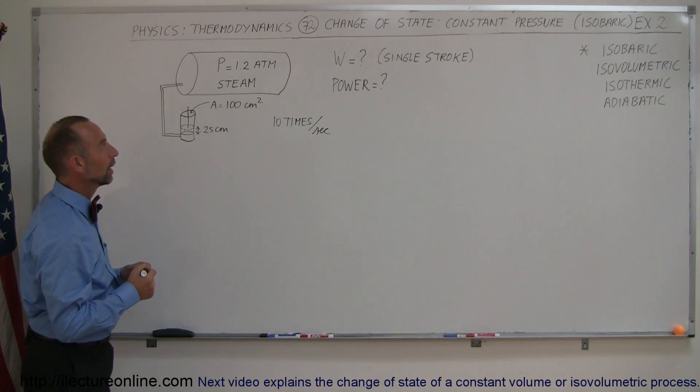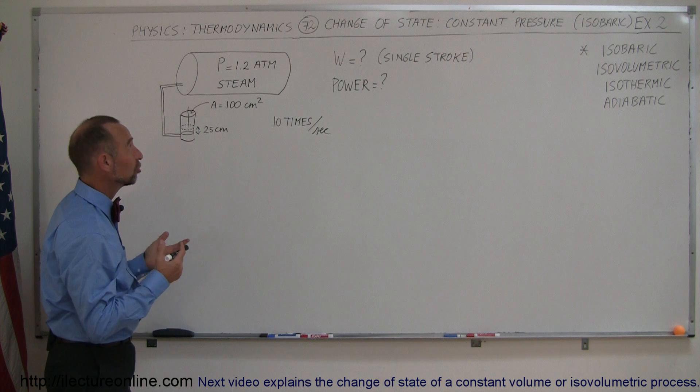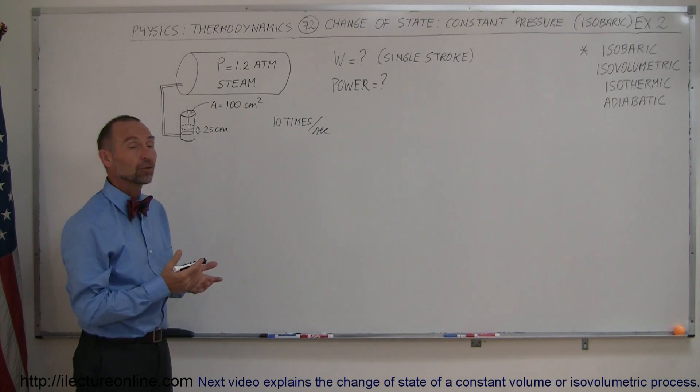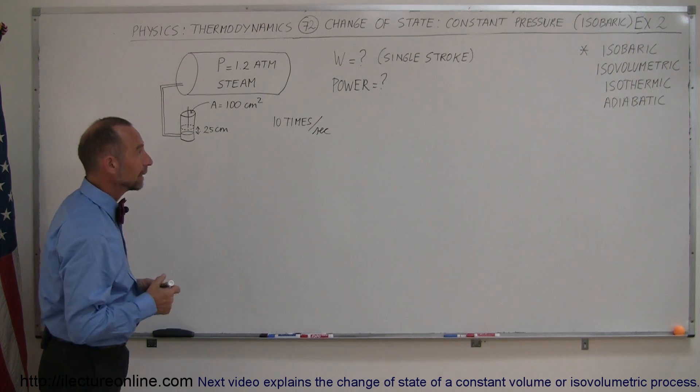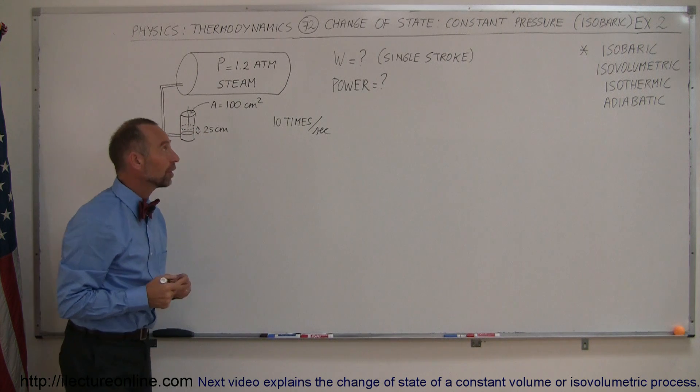And here's example two on how to calculate the work done by a change of state of a gas when the pressure remains constant, for example, in an isobaric process. And again, this will be one of the four types of thermodynamic processes that we're going to deal with.